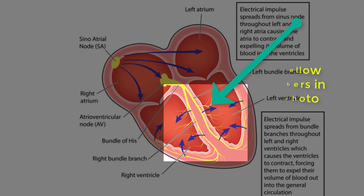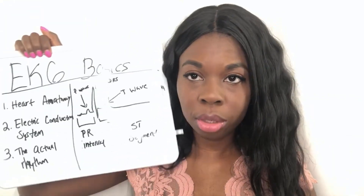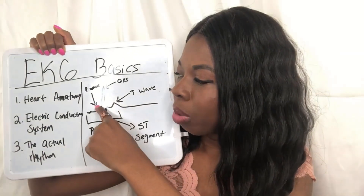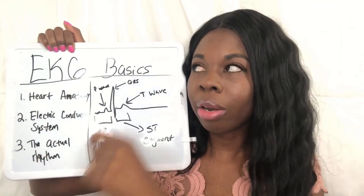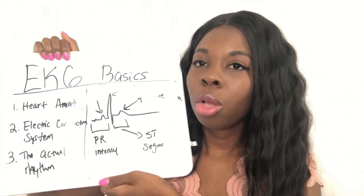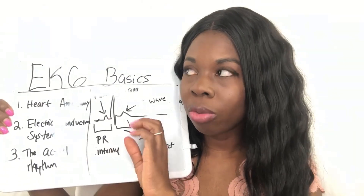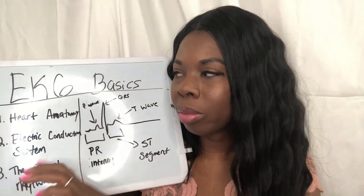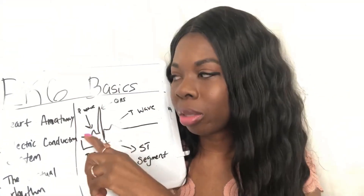Now let's talk about the electrical conduction system. Typically, what happens is that the heart first releases an impulse from the SA node. That impulse is what we call the P wave. So a normal heart will release an impulse from the SA node to the AV node. The time between the SA node and the AV node is the PR interval, but the actual firing of the impulse is the P wave.